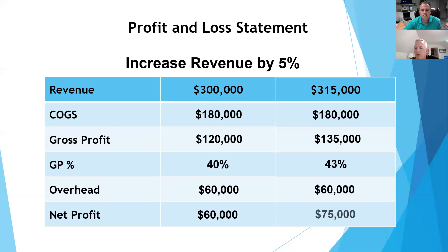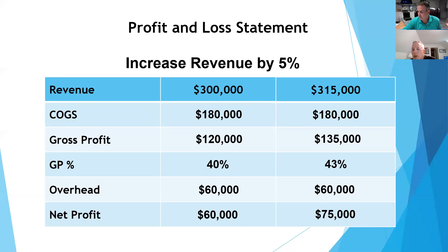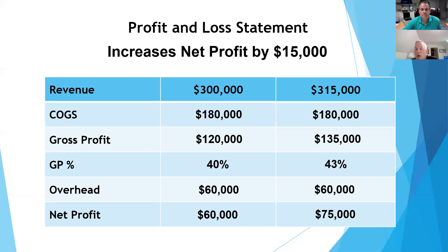The fixed costs stayed the same — overhead is $60,000. So a 5% increase in revenue was basically a $15,000 increase in this example, and it goes right through to the bottom line. You went from $60,000 to $75,000 in profit. So increasing the revenue goes right to the bottom line, everything else staying the same.